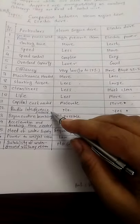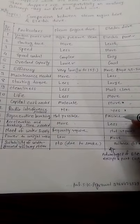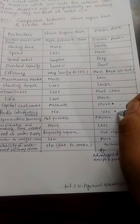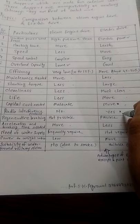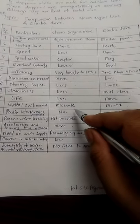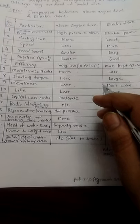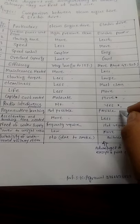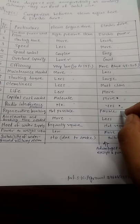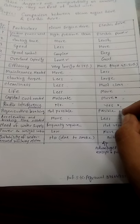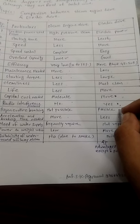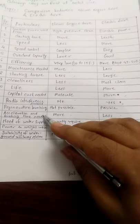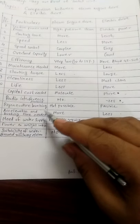Radio interference is produced in electric drive, which is another disadvantage compared to steam engine drive. On the other hand, regenerative braking is possible in electric drive, resulting in less wear and tear of the wheels.